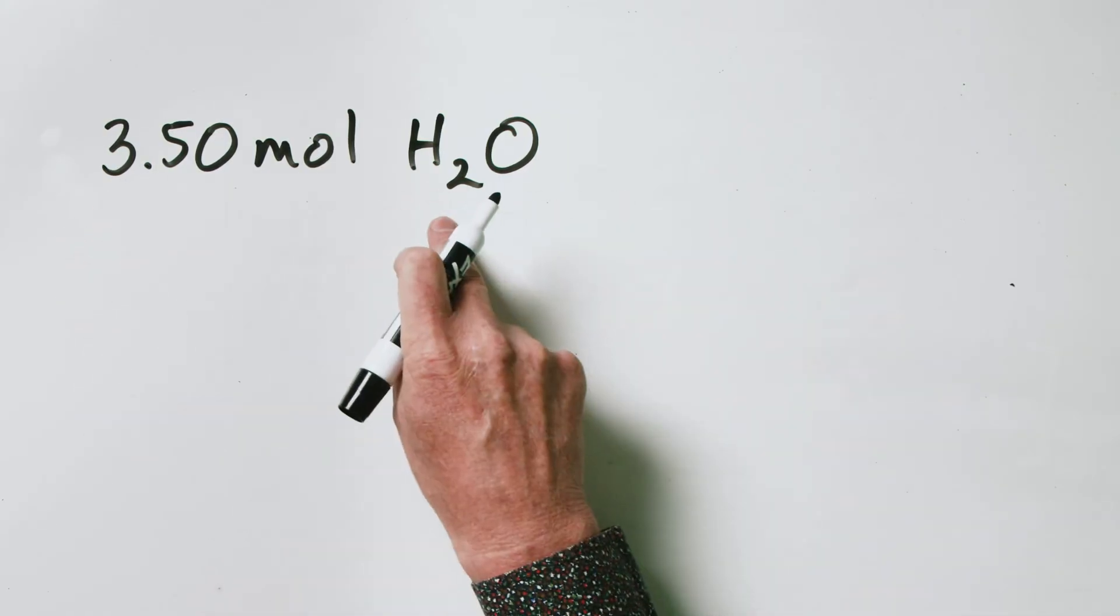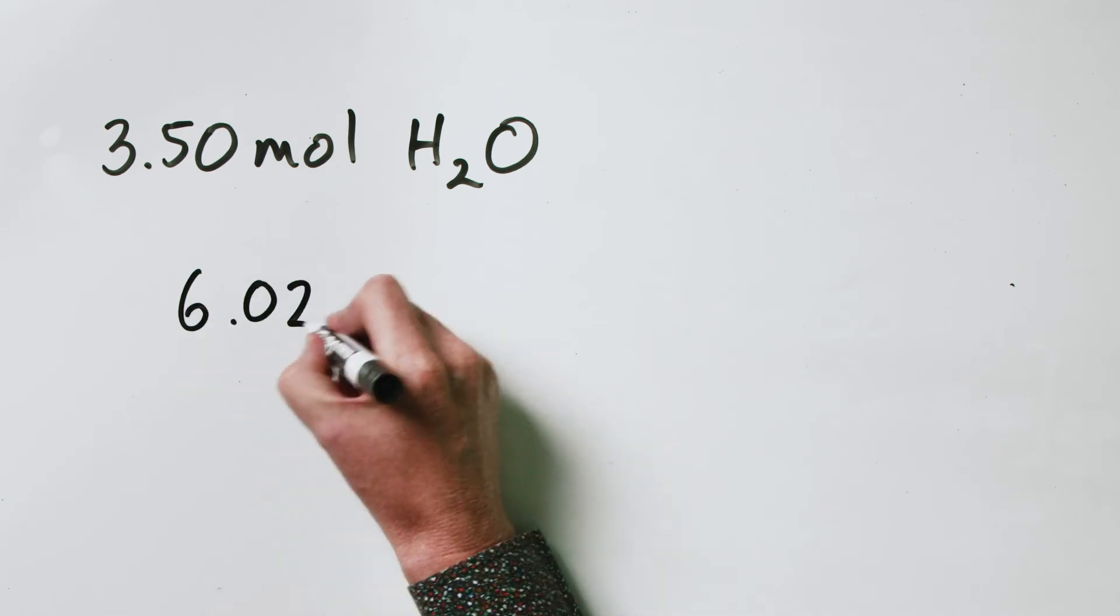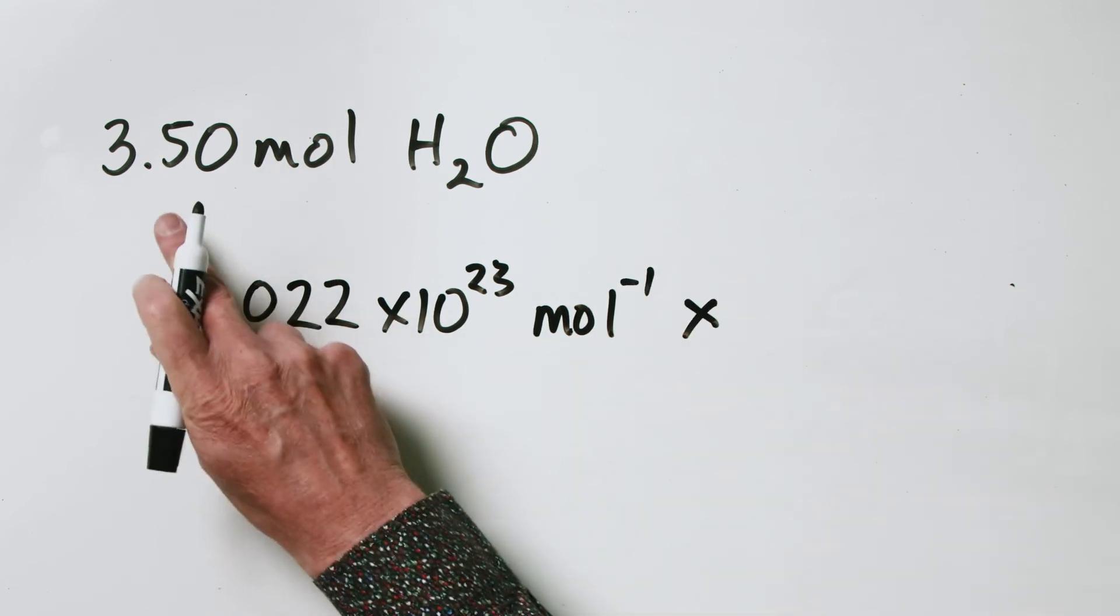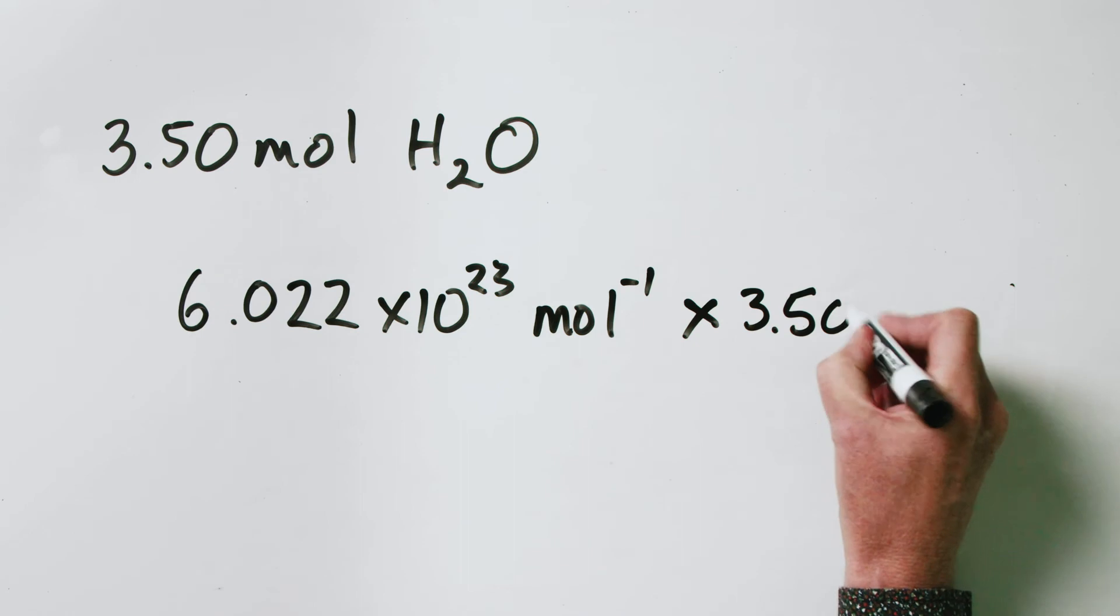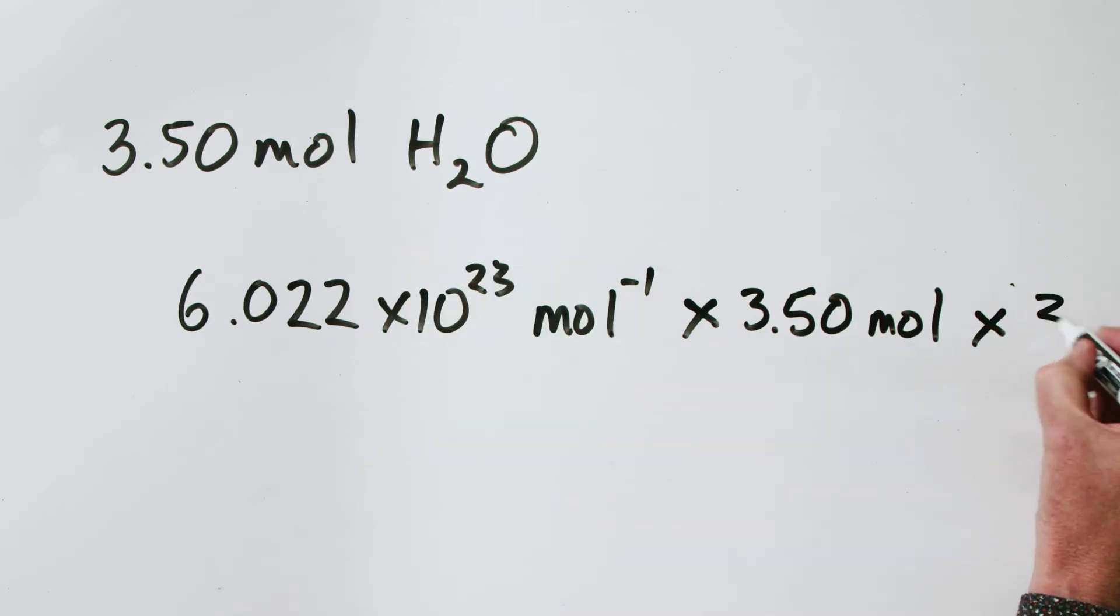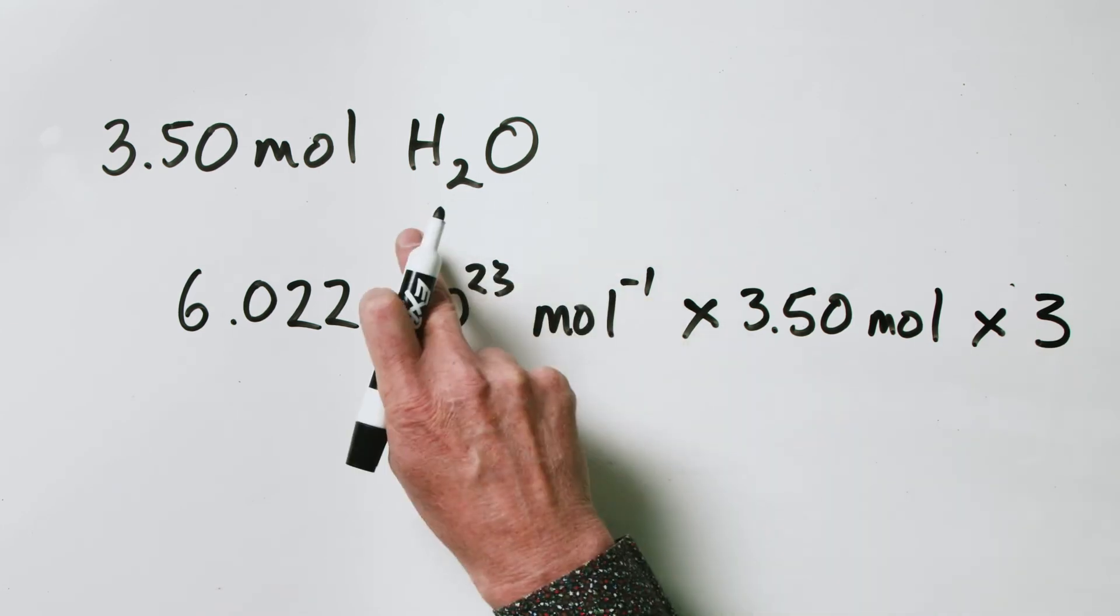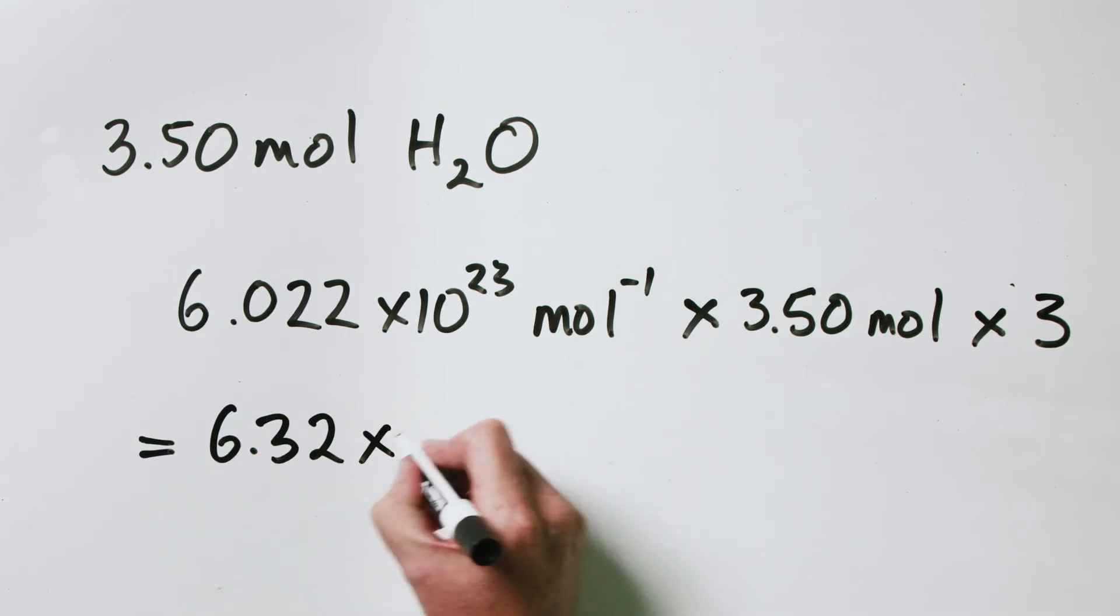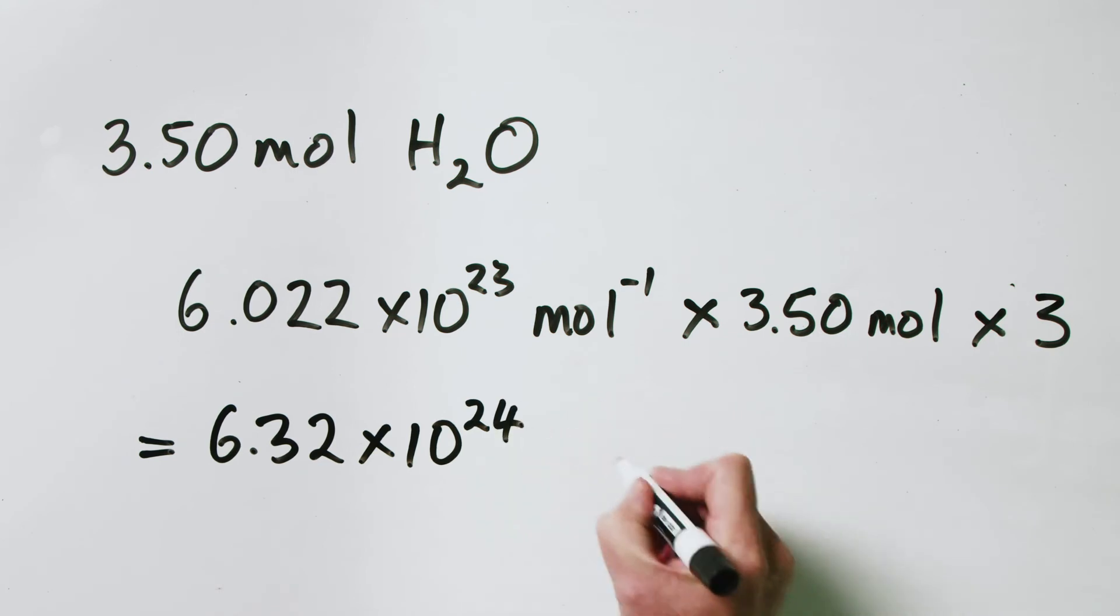We've got to realize that each molecule of water is made up of 2 hydrogen atoms and 1 oxygen atom, making a total of 3 atoms in every molecule. Therefore, the number of atoms present in 3.5 moles of water is 6.022 times 10 to the power of 23 per mole multiplied by 3.5 moles multiplied by 3 because we have 3 atoms in every molecule. That gives us 6.32 times 10 to the power of 24 atoms.